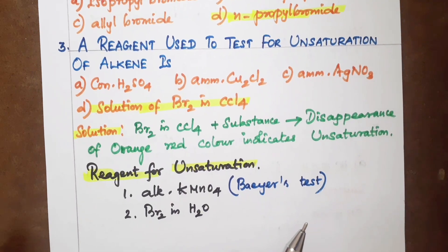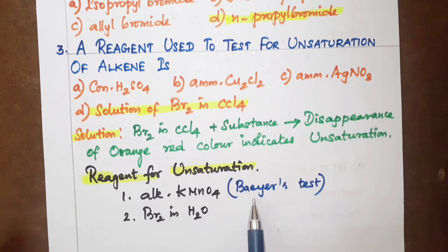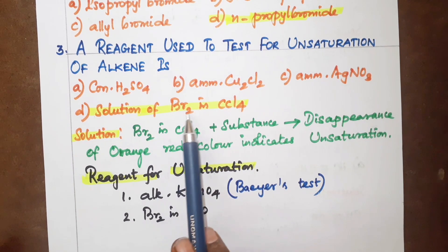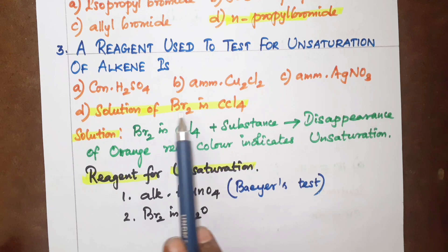Unsaturation reagents include alkaline permanganate, bromine water, and bromine in carbon tetrachloride. The correct answer is solution of bromine in carbon tetrachloride.